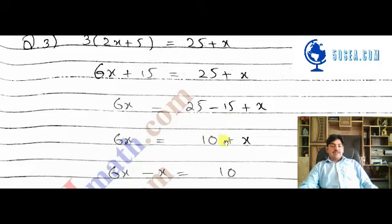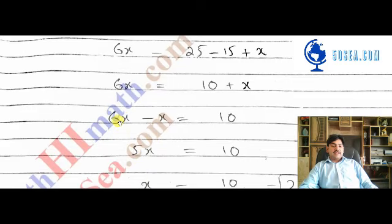This x on the right side will move to the left side. So 6x minus x equals 5x, which equals 10.